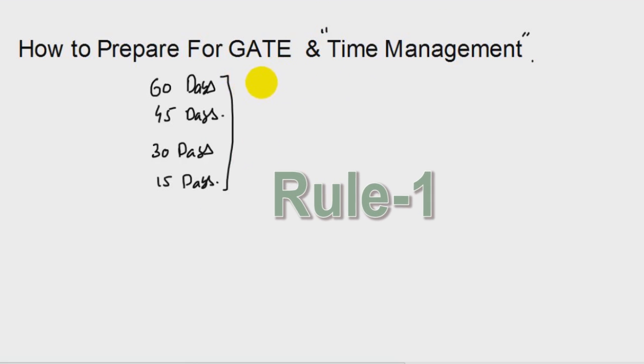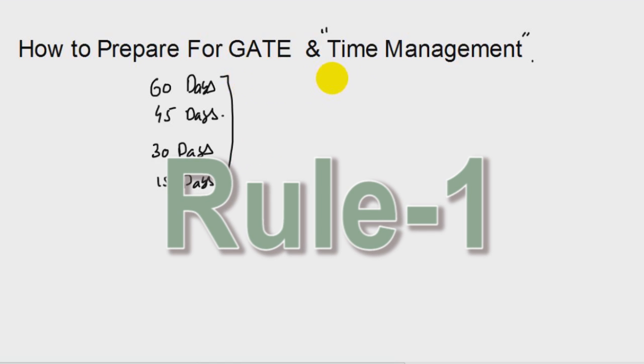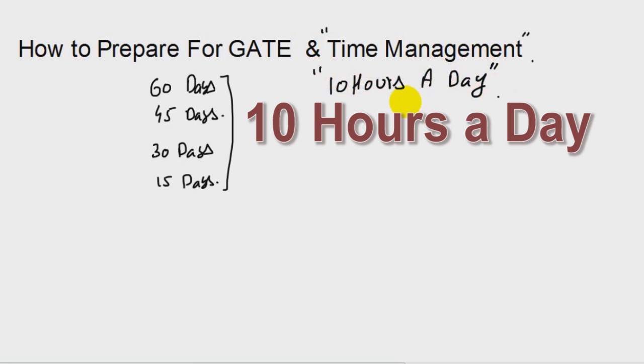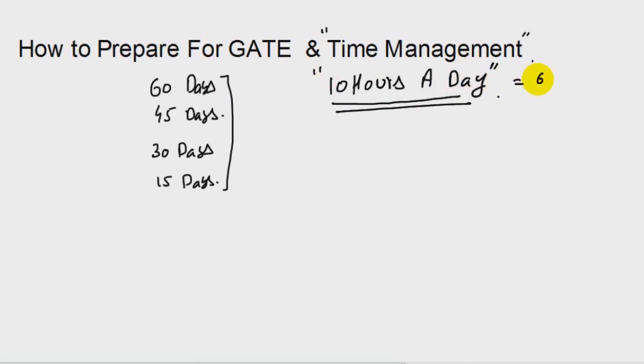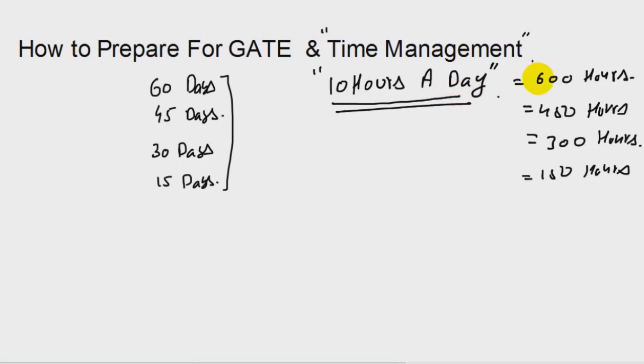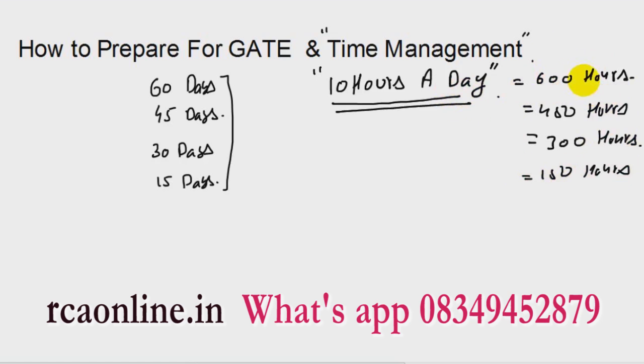The basic rule is that you should prepare for at least 10 hours a day. This is the key. If you multiply 10 hours by 60 days you get 600 hours, 45 days gives 450 hours, and similarly 300 and 150 hours. This is ample time friends to prepare. Don't get panicked, don't get afraid. This is ample time for any student to get prepared, but you have to stick to that with good time management.